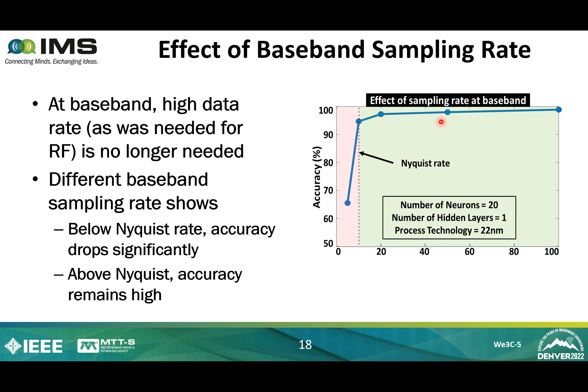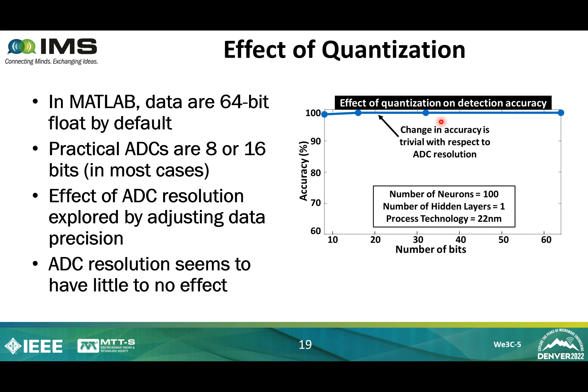Another practical consideration is ADC quantization. In MATLAB, all data are 64-bit by default, but practical ADCs are 8 or 16 bits in precision for most cases. To see the effect of ADC resolution, we converted the data precision and trained the neural network with it. From 8 to 64 bits, the ADC resolution has very trivial effect on the neural network's performance, so we can say that ADC resolution does not significantly affect the neural network's performance in this range.